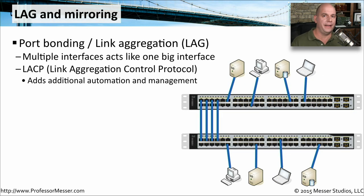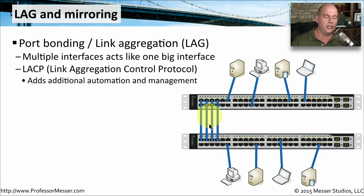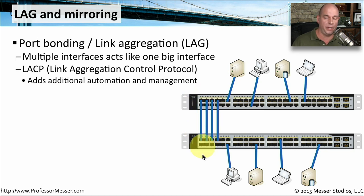Occasionally you'll want more than one interface connecting multiple switches together, especially if there are high bandwidth requirements for traffic traversing those switches. We call this link aggregation — we're able to take multiple links between switches and tell them to treat those links as if they were one high-bandwidth connection. In this case, four individual links give us four times the bandwidth of a single connection. This is called port bonding, also referred to as link aggregation or a LAG connection.